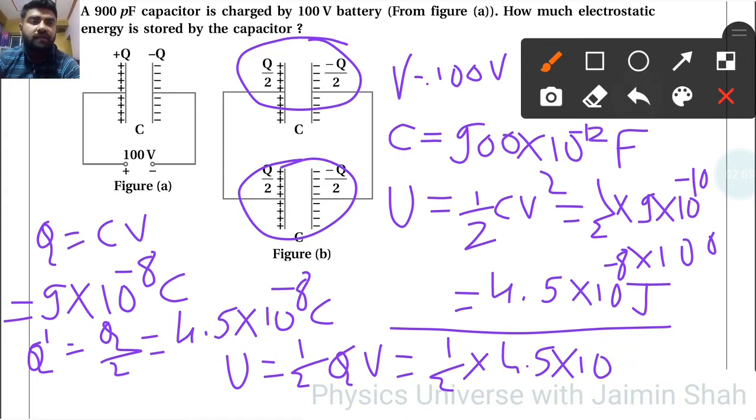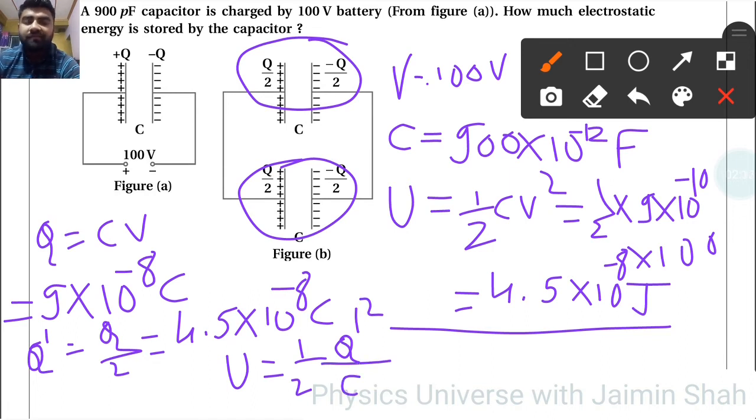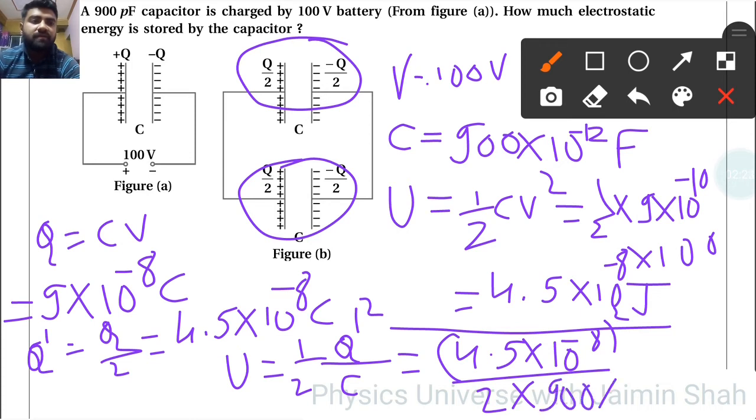Half Q dash square by C, Q square by 2C. This is the third formula of energy of the capacitor. So 4.5 into 10 raise to minus 8 whole square upon 2 into capacitance, which is 900 into 10 raise to minus 12.